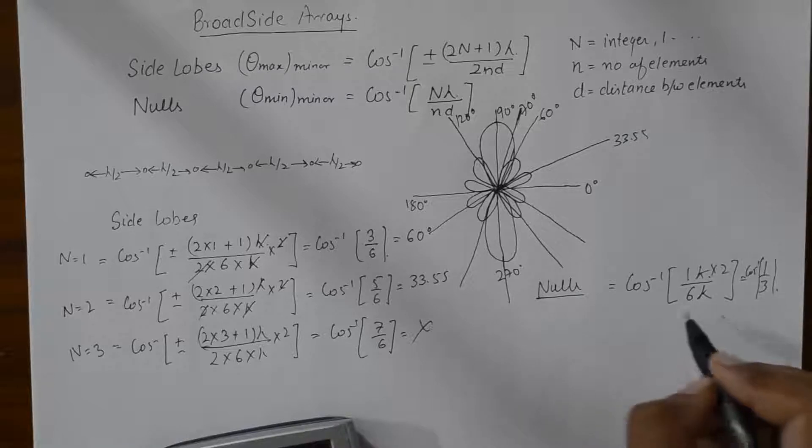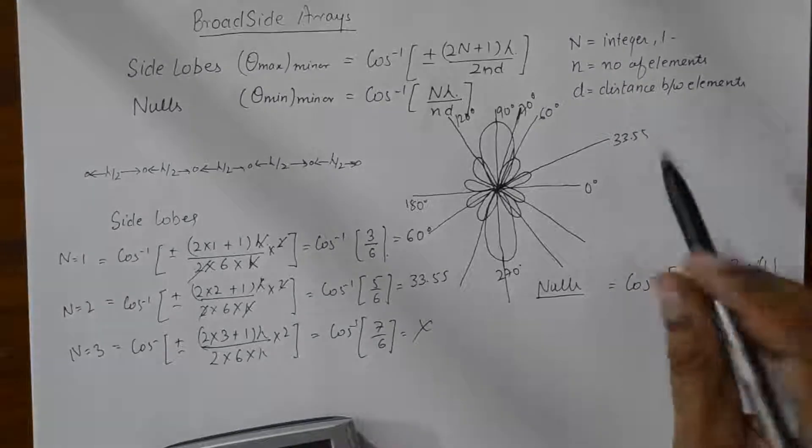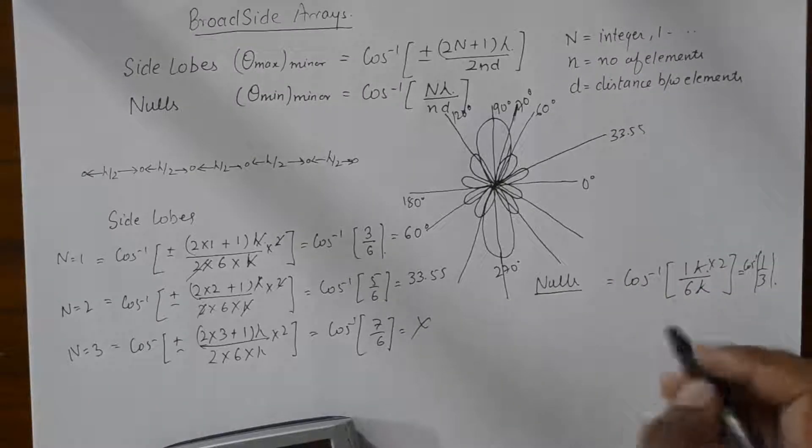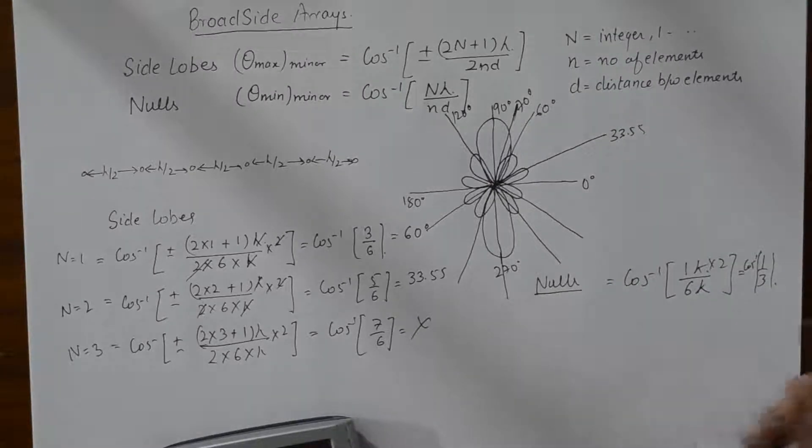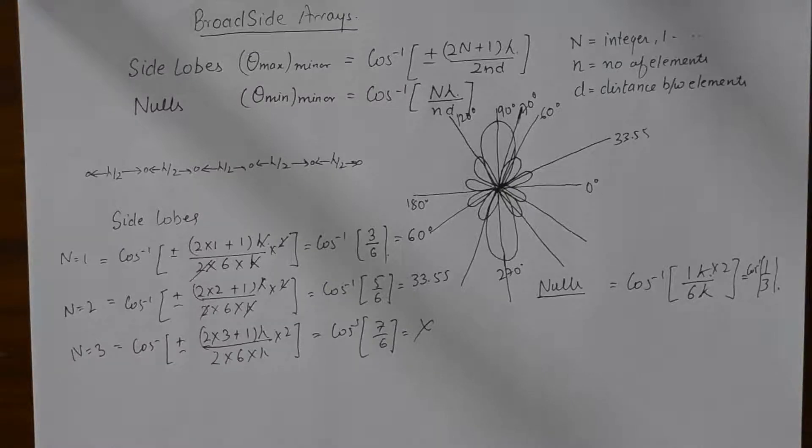Similarly, you will find other nulls by putting the value of N till you find a valid value of cos inverse. And that is how you basically plot the radiation pattern of a broadside array with many elements, which only depends upon number of elements and distance between elements. I hope this quick tutorial was helpful.